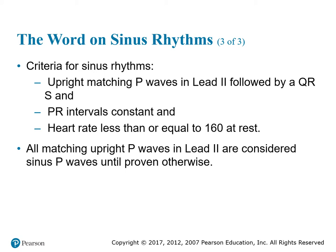Criteria of a sinus rhythm: you will have a positive upright P wave before each QRS complex, and P waves will look alike. There will be a constant PR interval — meaning if you take your PR interval at the beginning, the end, or the middle, it will all be the same. You will have a regular atrial and ventricular rhythm. Your heart rate can be less than or equal to 160 beats at rest. All P waves that are upright in lead two are considered sinus P waves until proven otherwise.